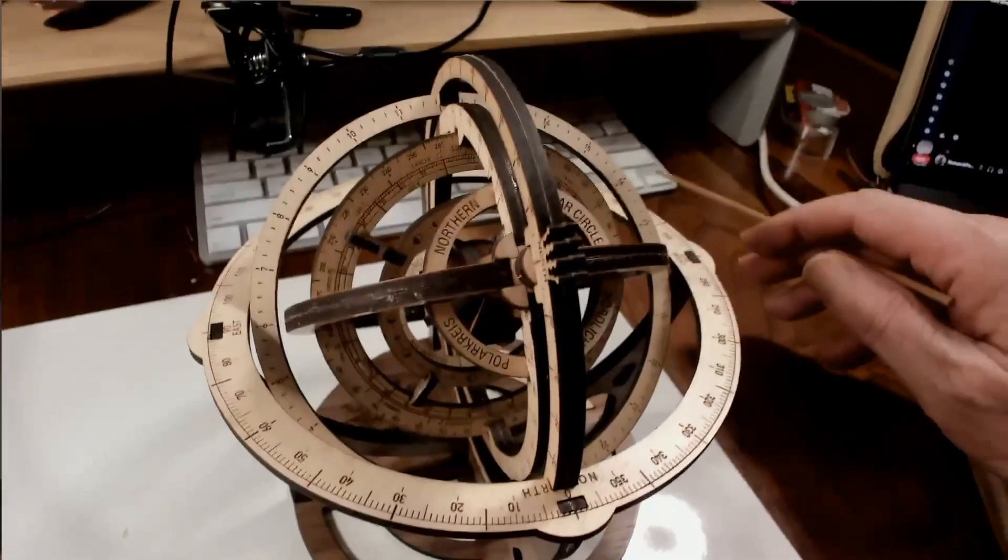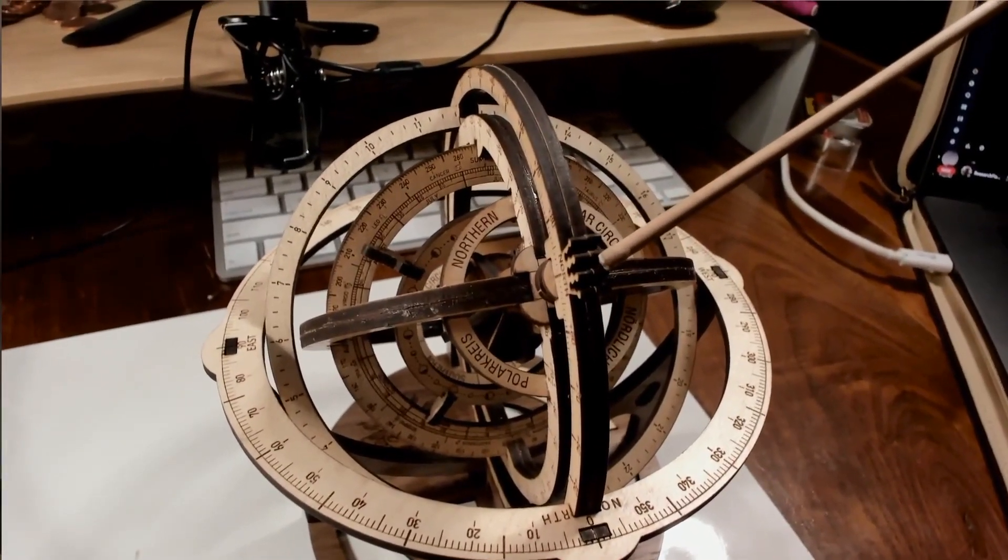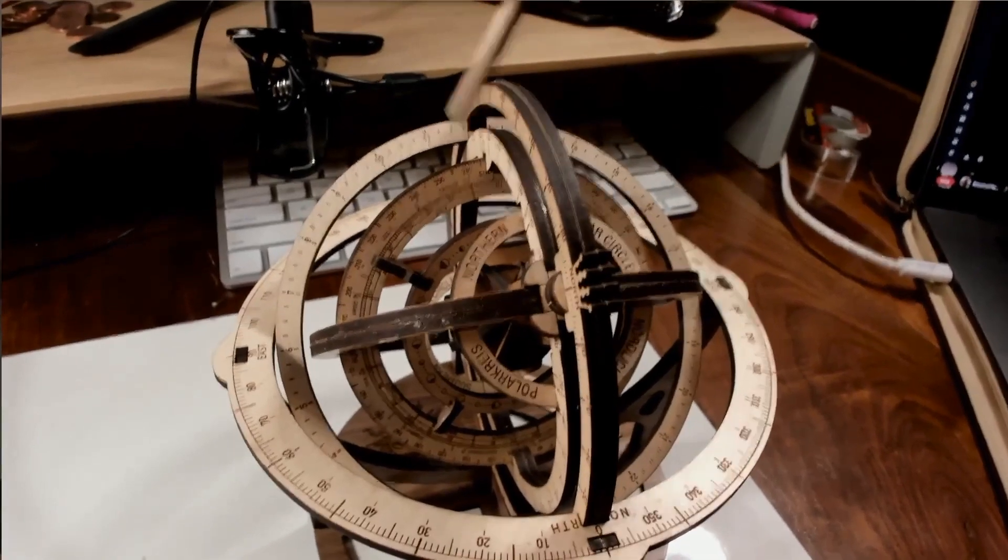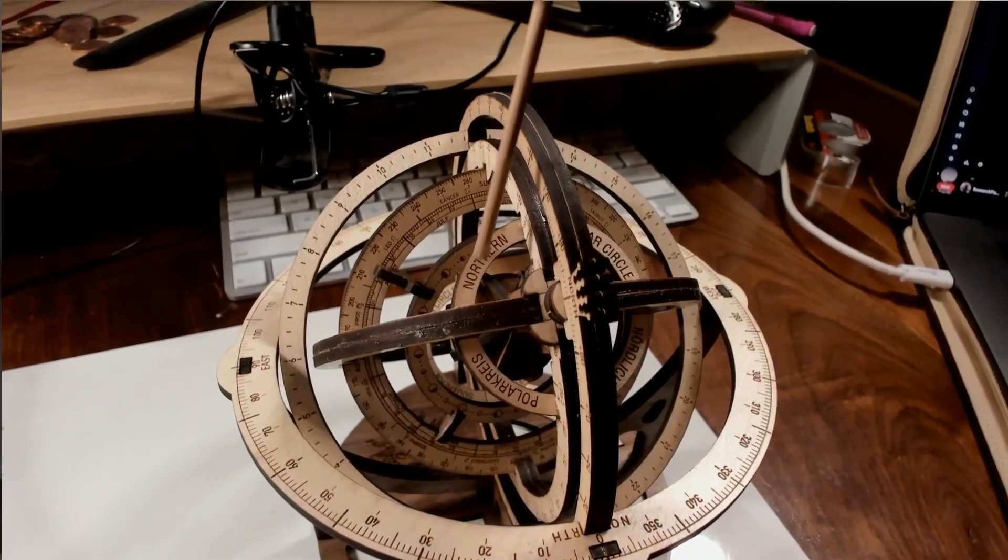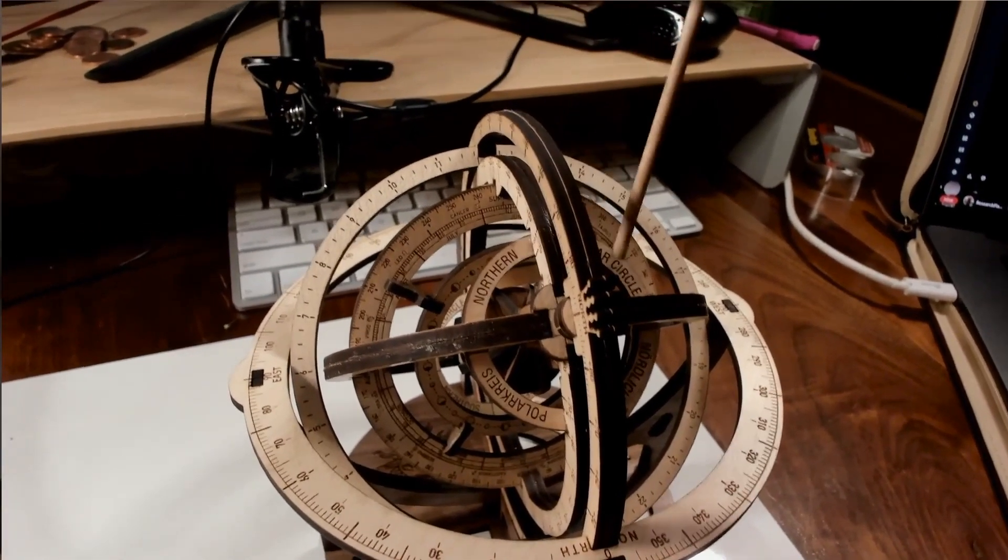Now looking at it from the top, we see that we have the north star here. This is the polar circle, the arctic circle.